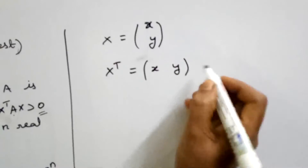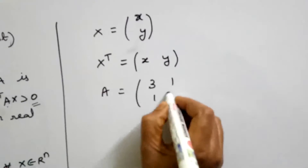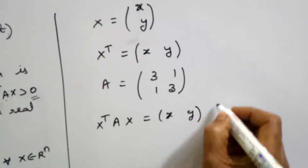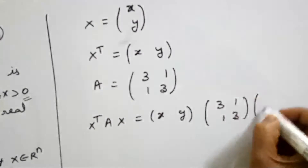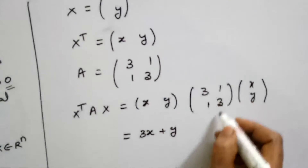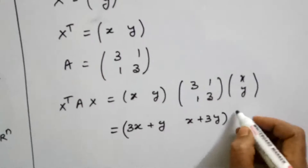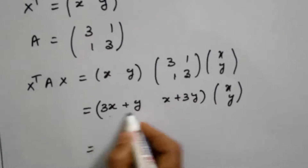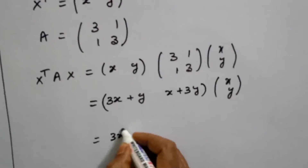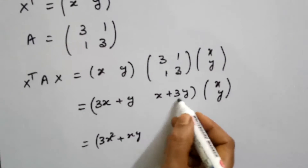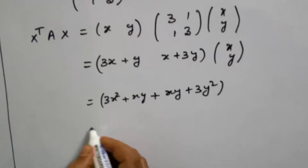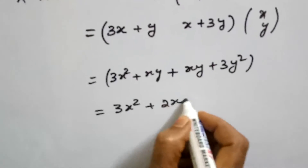Now, for the general case, we choose column vector x = [x, y]. Then x-transpose is [x, y], A is [3,1; 1,3], and x is [x; y]. Computing x-transpose A first: first row, first column gives 3x plus y; first row, second column gives x plus 3y. Then multiplying by x: 3x squared plus xy, plus xy plus 3y squared, giving 3x squared plus 2xy plus 3y squared.